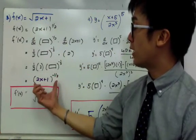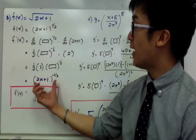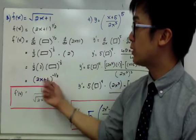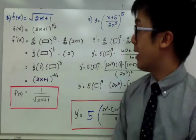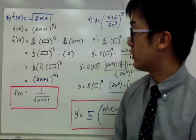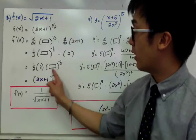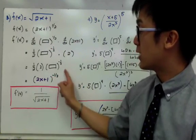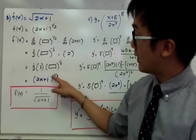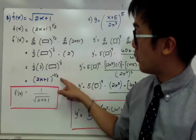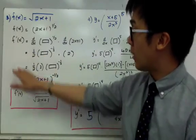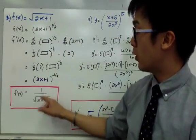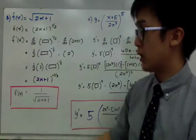So f′(x) = (2x+1)^(−1/2). To simplify and remove the negative and fractional exponent, we can rewrite this as f′(x) = 1 / √(2x+1).